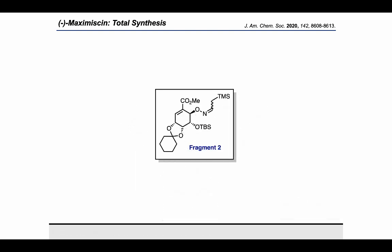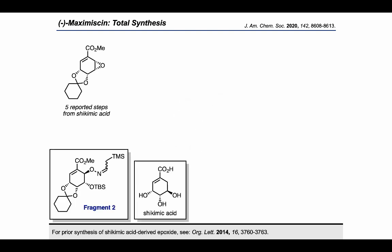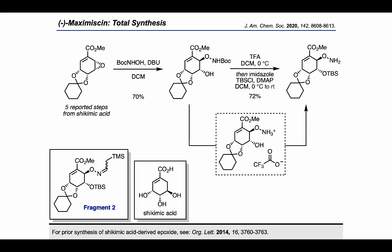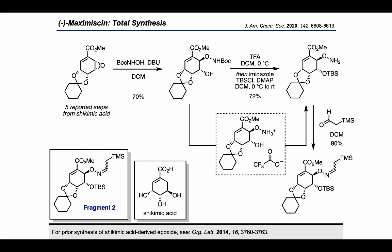Let's take a quick look at how they made Fragment 2. To make this fragment, they started with an epoxide, which can be made in five reported steps from shikimic acid. They opened the epoxide with Boc-protected hydroxylamine, then treated with TFA to deprotect the Boc group, followed by TBS protection of the secondary alcohol, going through the ammonium trifluoroacetate intermediate. Condensation of the amine onto an alpha-TMS acetaldehyde piece gave Fragment 2, ready for coupling.